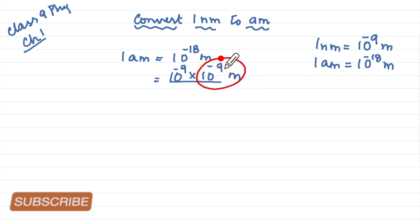If you look at this, 10 to the power minus 9 is your 1 nanometer. And so we will write 10 to the power minus 9 and for this we will write nanometer. But they are asking 1 nanometer.